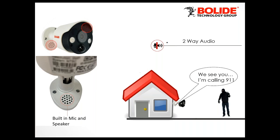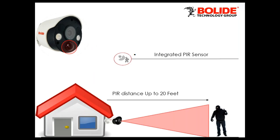On the two-way audio: if somebody is walking to the door and you notice them, and you have it set up on your phone, you press the button to speak. On the left-hand side you can see the built-in speaker and mic. The sound is very clear. The integrated PIR has a max distance of 20 feet. If somebody is walking towards a building, it picks them up right away, and we can set the sensitivity on that as well.